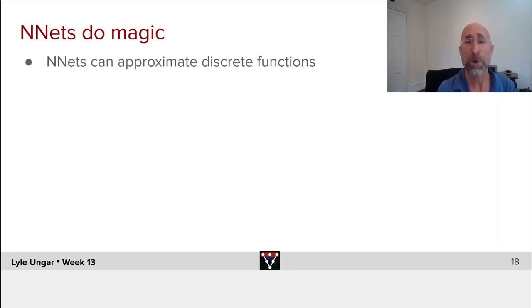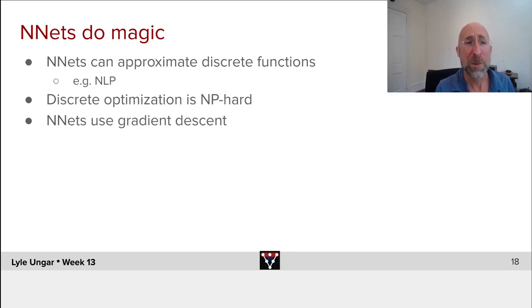You can take a neural net and it can approximate a piece of C code or natural language process, natural language where you have sets of sentences. You have words which are discrete. You have relationships between them and note that they're doing something that is slightly implausible.